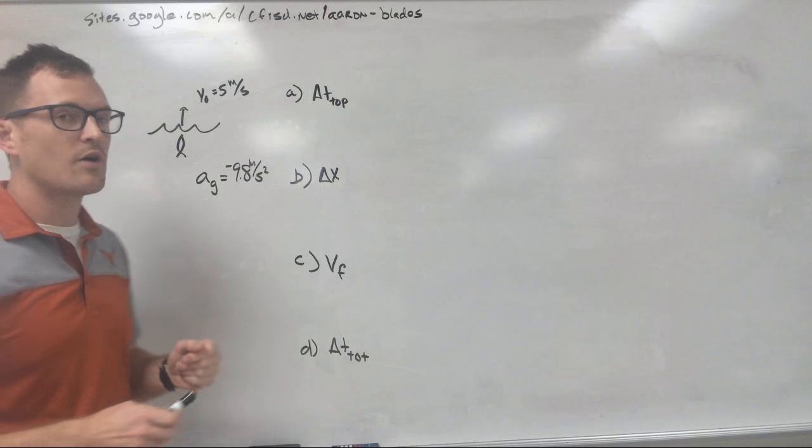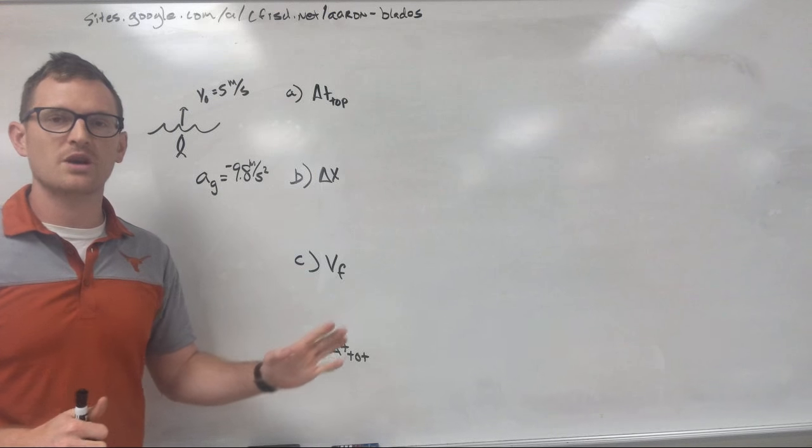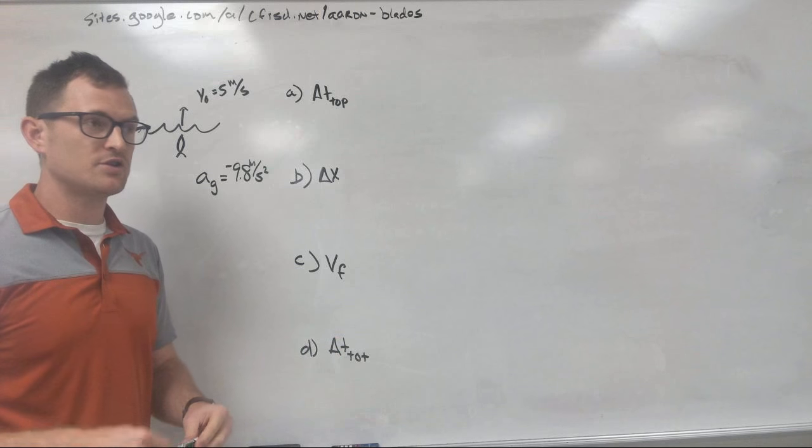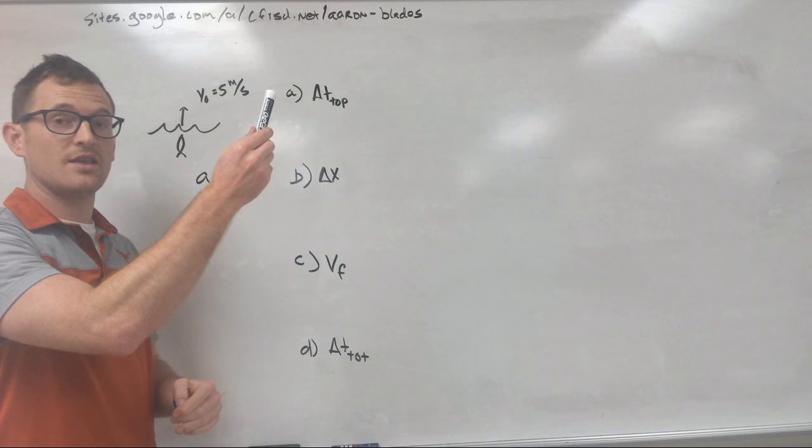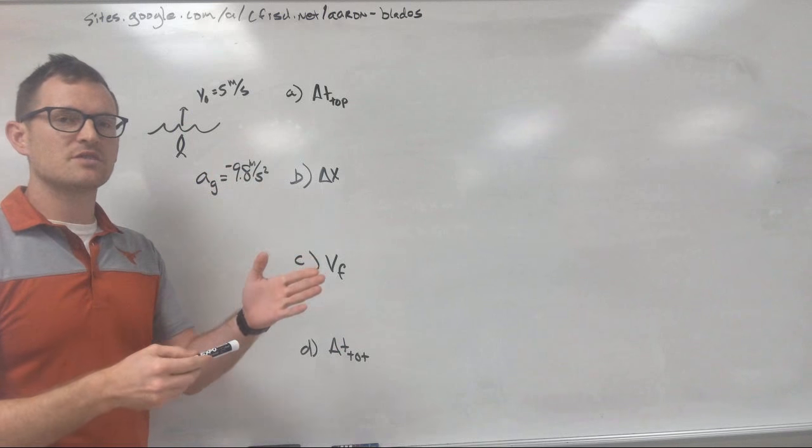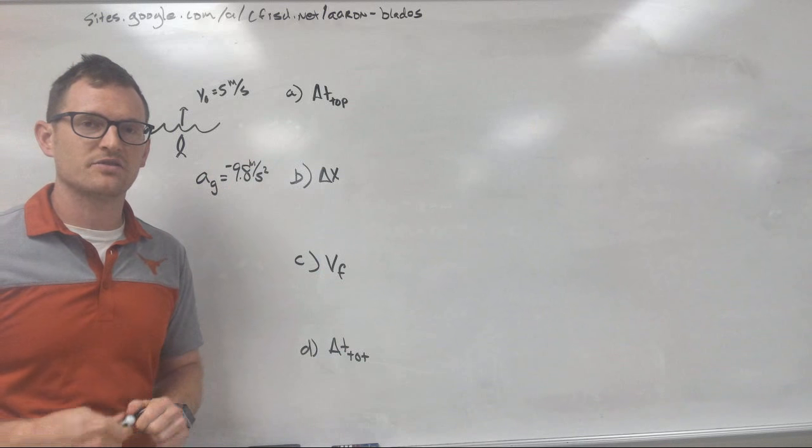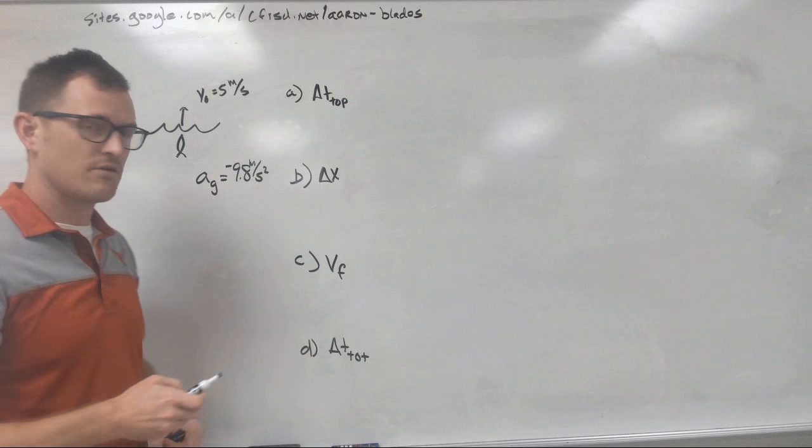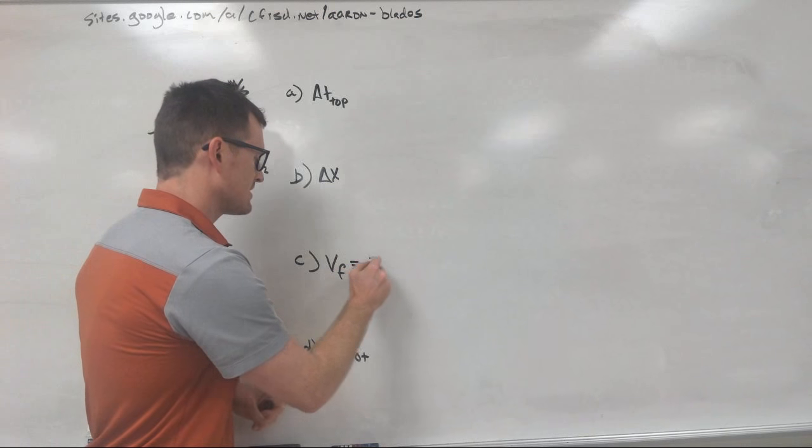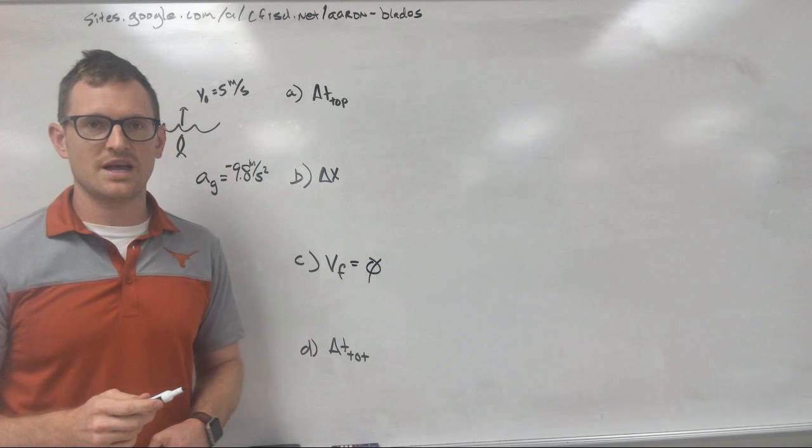Now, there is one thing we can know about this problem before we do any math at all. In order for something to go upwards and then turn around and come back, it must stop at the very top of its flight, which means that our final velocity at the top of its flight is zero meters per second.